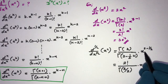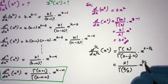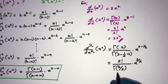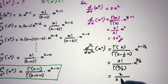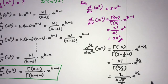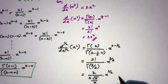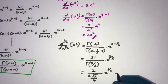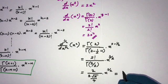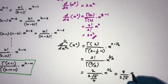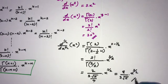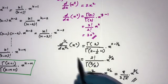Gamma(3) equals 2 factorial equals 2. For gamma(5/2), we know gamma(5/2) equals (3/2)(1/2)√π equals (3√π)/4. So the half derivative equals 2 divided by (3√π/4) times x to the 3/2, which simplifies to 8 over (3√π) times x to the 3/2. This is the half derivative of x squared.